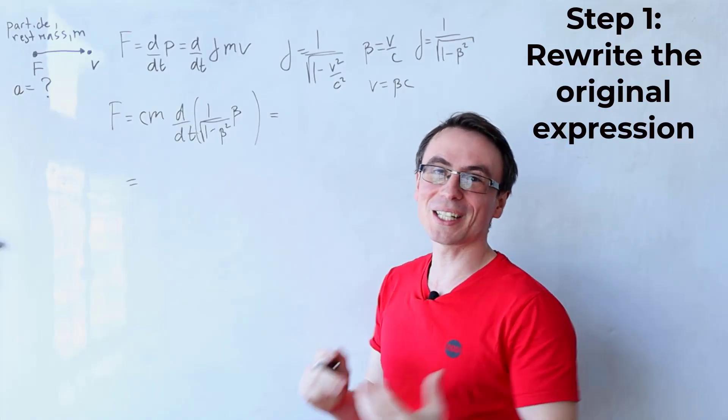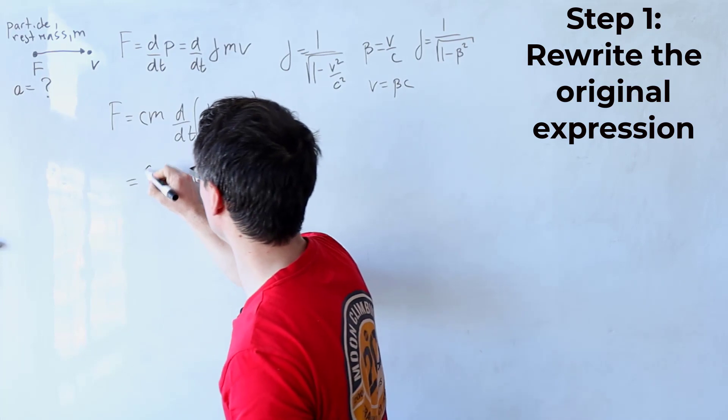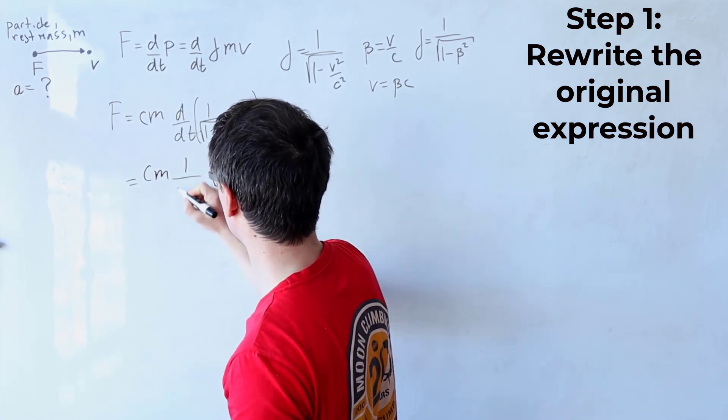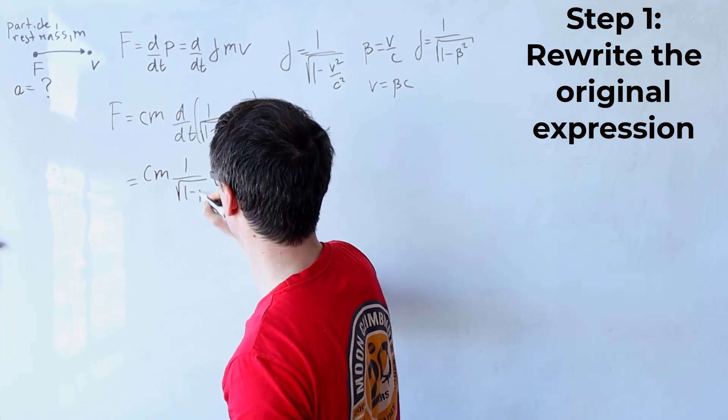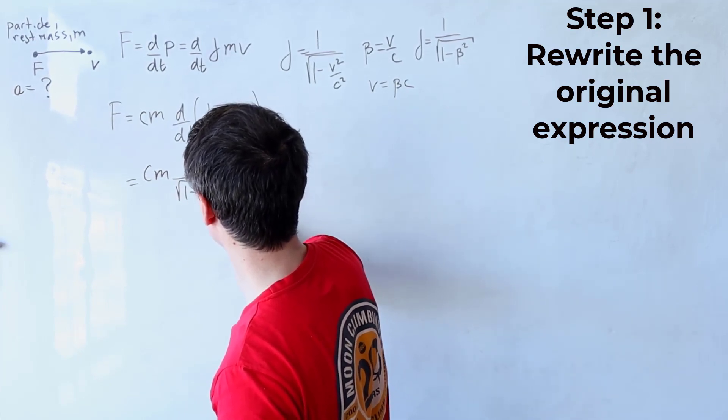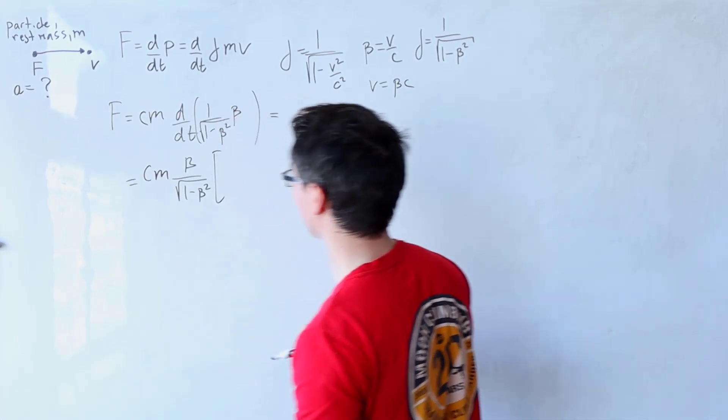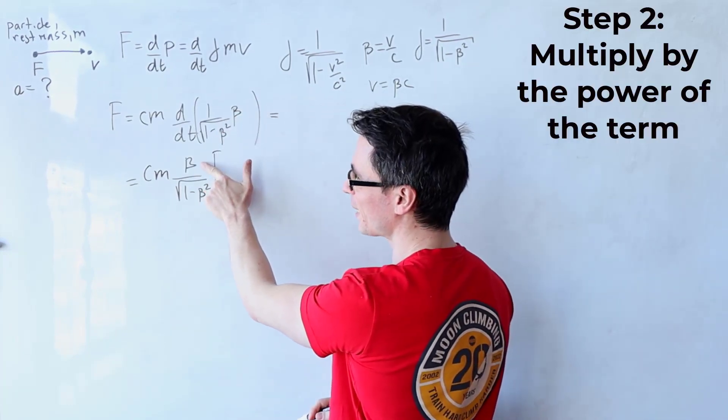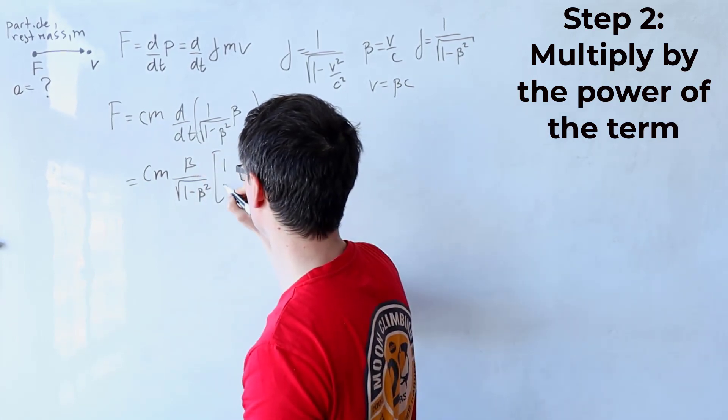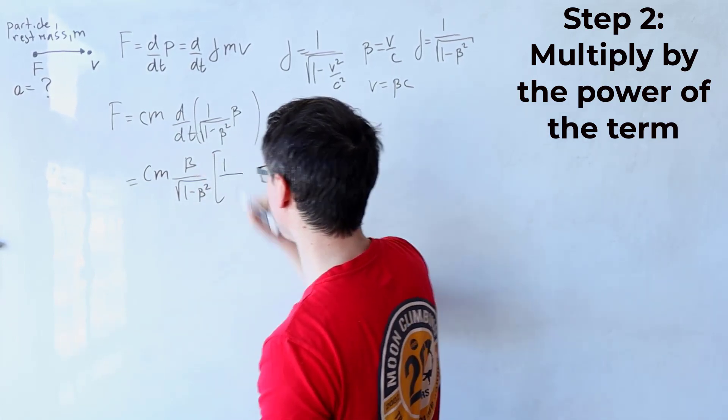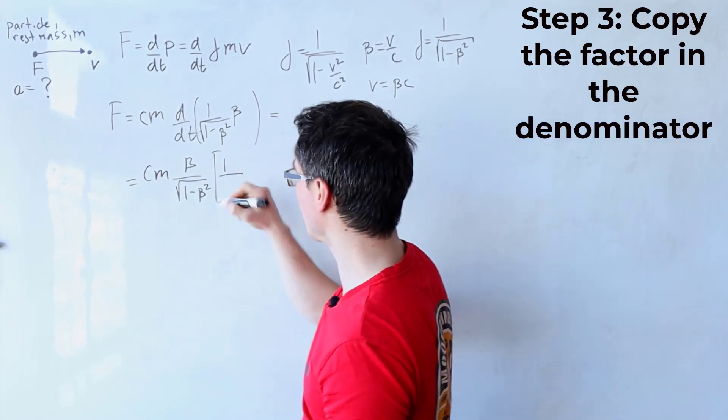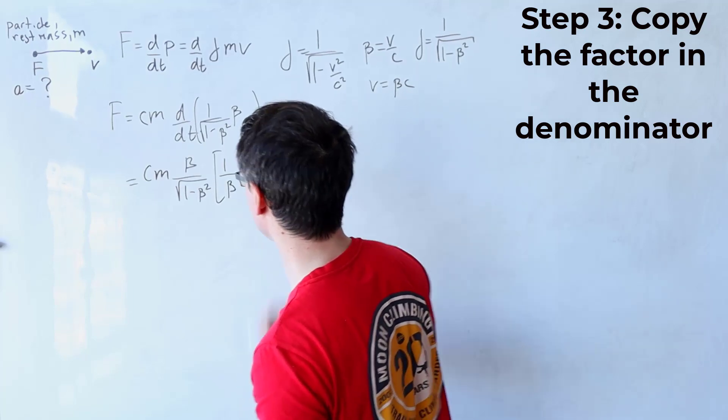The first thing that we need to do is just rewrite our expression. So that would be c m and then one over the square root of one minus beta squared times beta. And then I'm going to be opening up some brackets. The power of the first factor is just one because it's beta to a power of one. So I'm just going to write a one. And then at the bottom of the fraction, I'm just going to copy down the factor. So this will be beta.